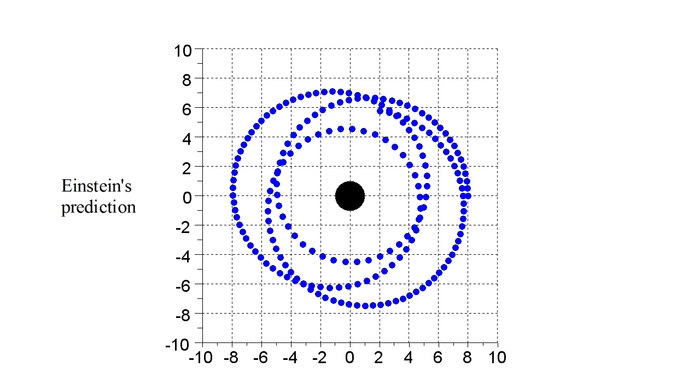Again, Newton's theory would predict a perfectly elliptical orbit for this case. Although orbits in our solar system involve much smaller gravitational fields than the one we've simulated here, orbital precession can indeed be observed.